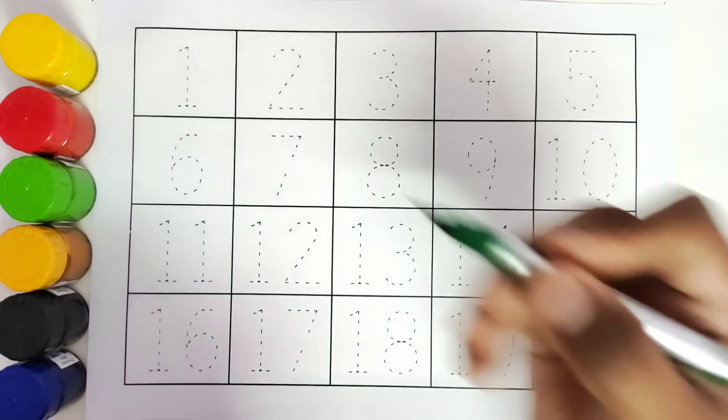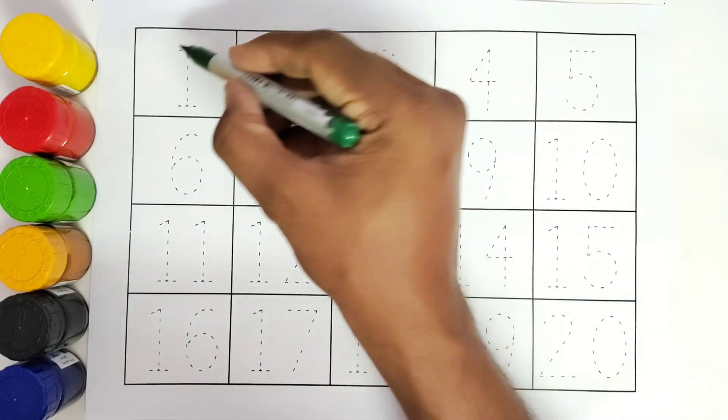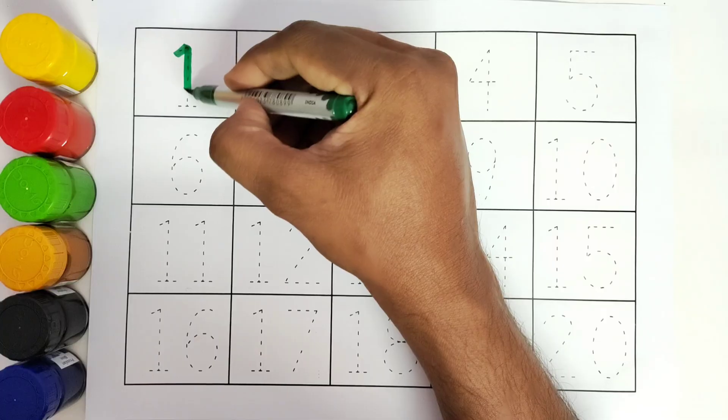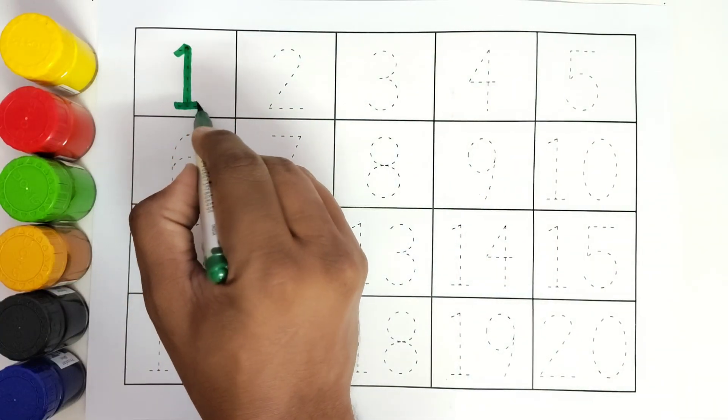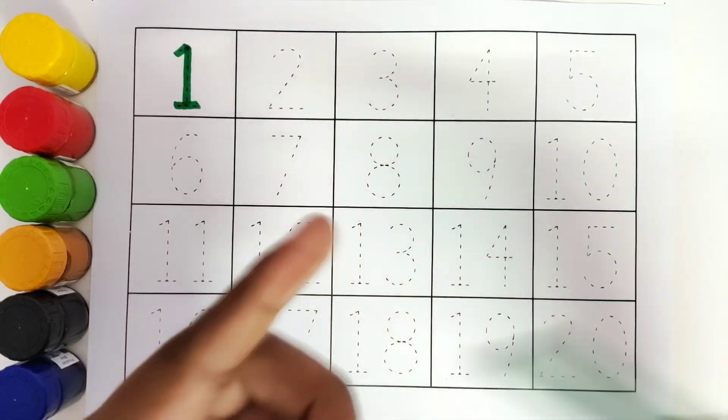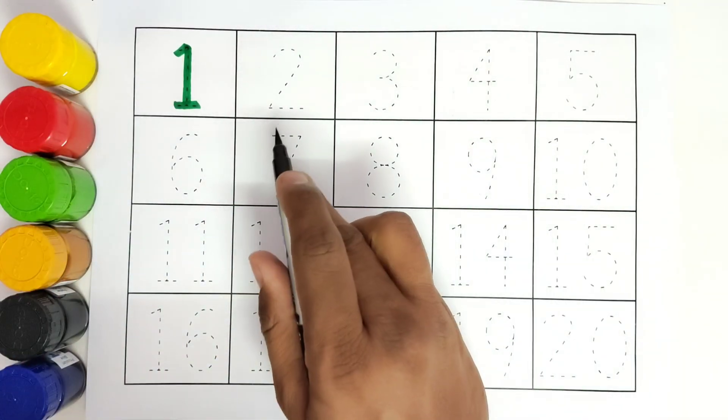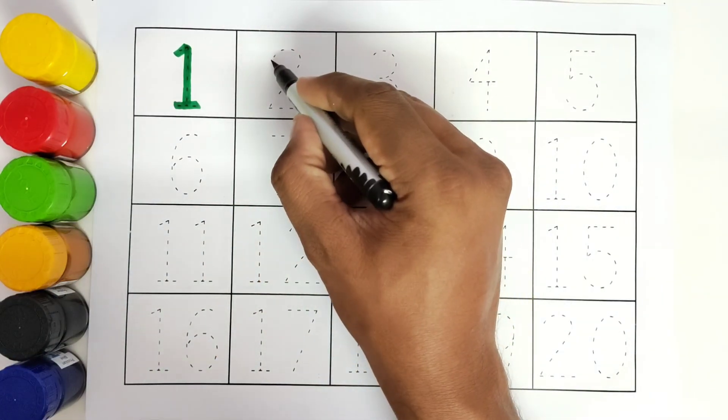Green color. Number 1. We will trace the number 1. This is black color. We will trace the number 2.